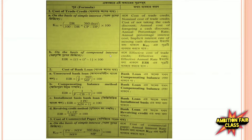Therefore, on the basis of compound interest, the most important thing is the effective cost of debt, effective rate, and effective annual rate. The EIR formula is: (1 plus i) to the power n, minus 1, multiplied by 100. This is the EIR ratio.